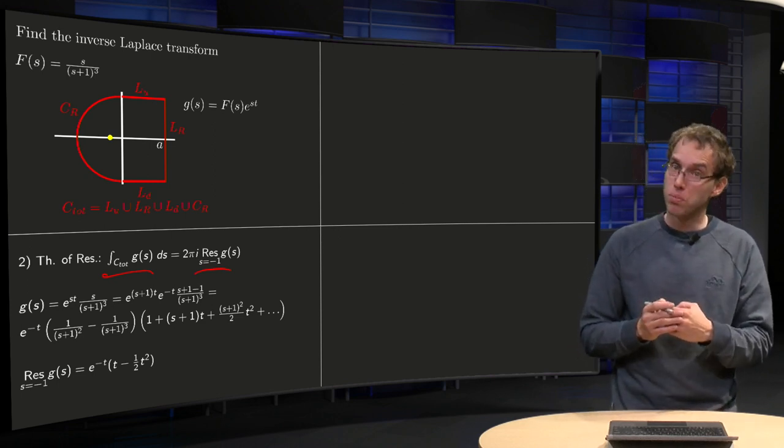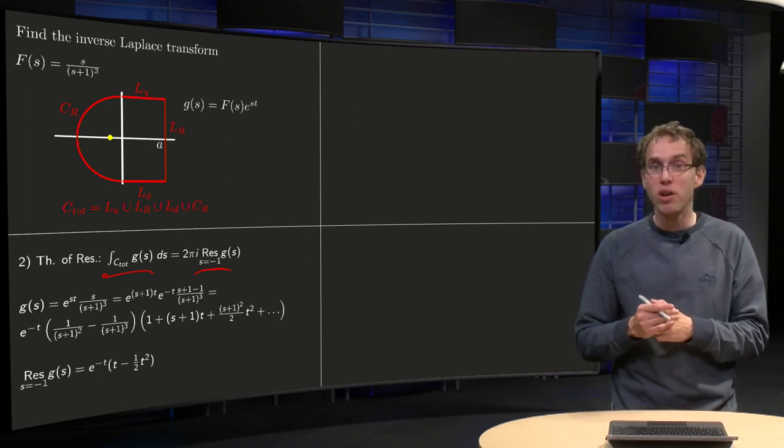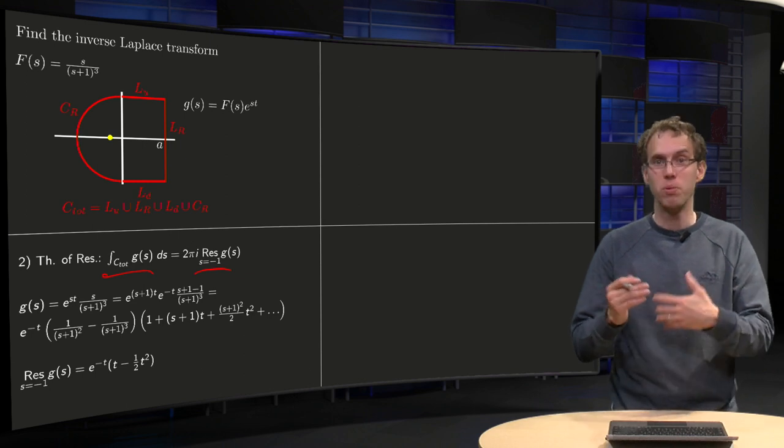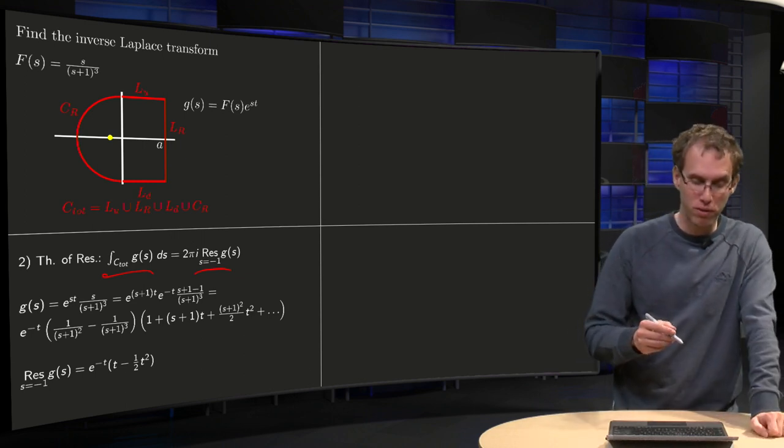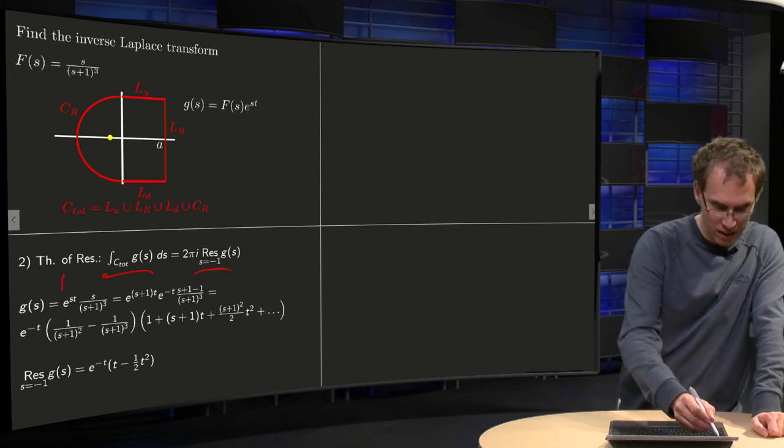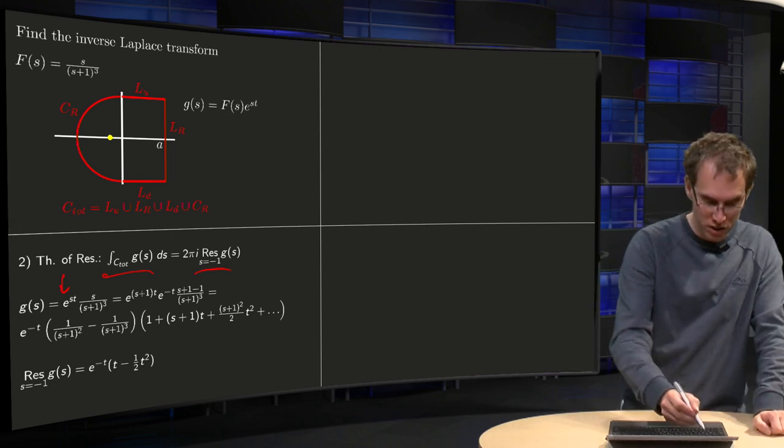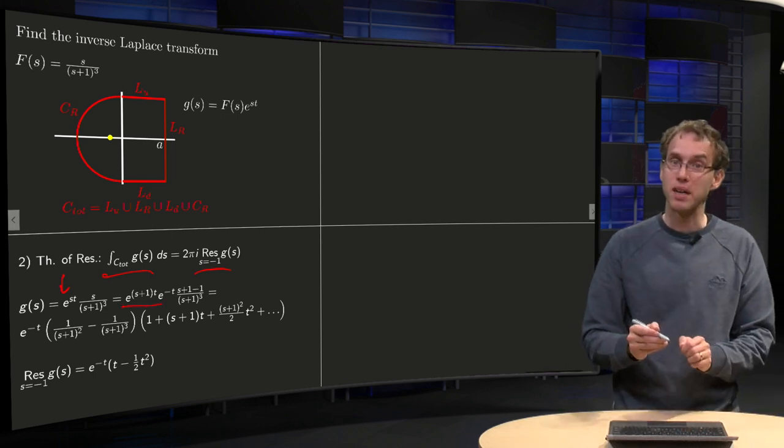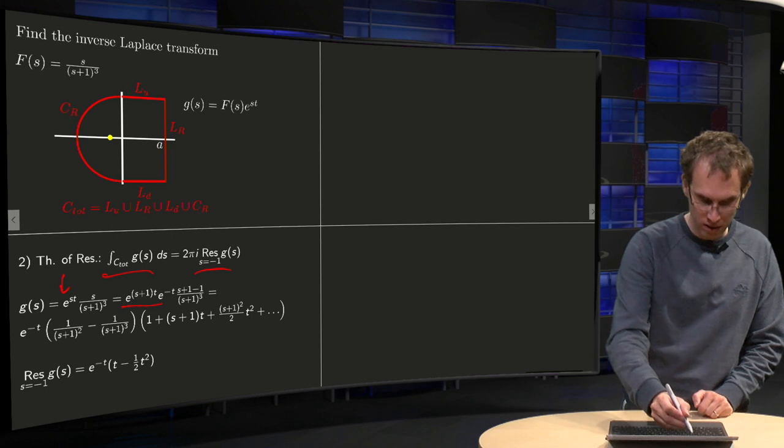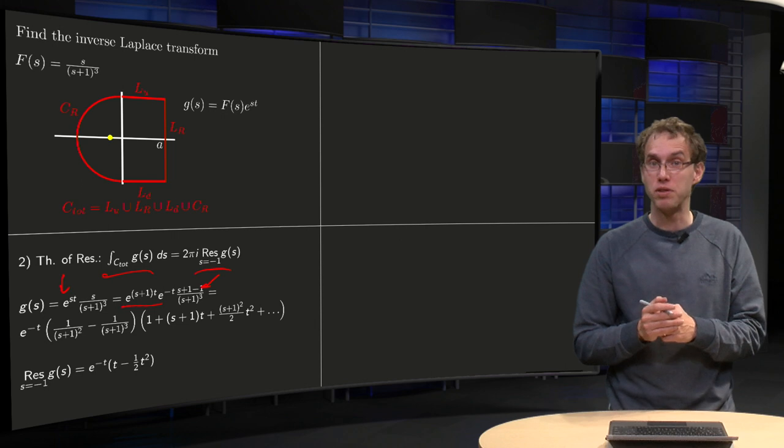Then we want to compute the residue, and in this case it's relatively easy to write down the Laurent series, so let's try that for a change, because e to the power ST can be written as e to the power (S plus one) times T times e to the power minus T. And S can be written as S plus one minus one, and in this way you can express everything in powers of S plus one.